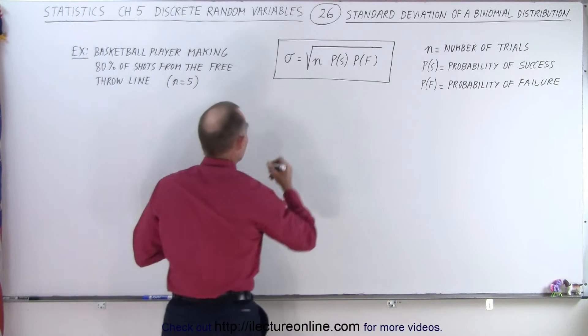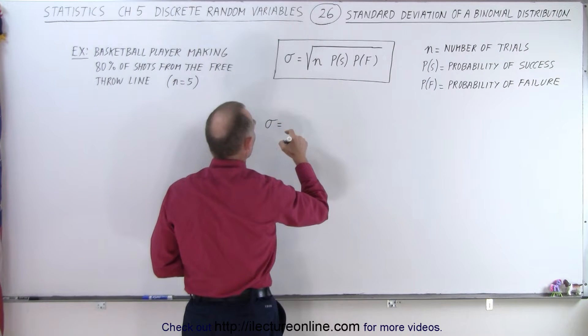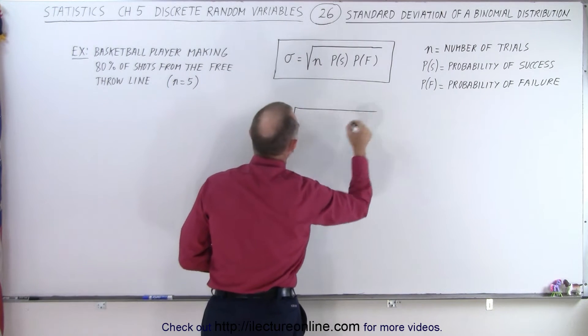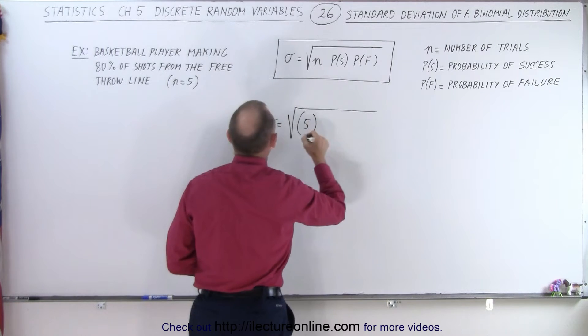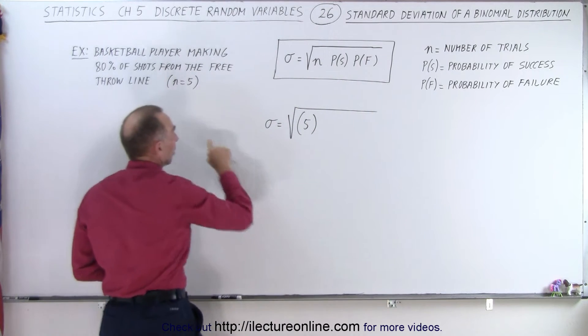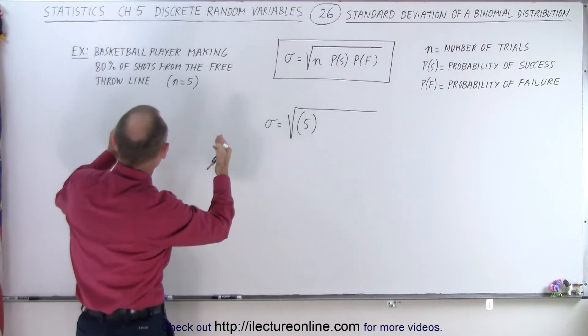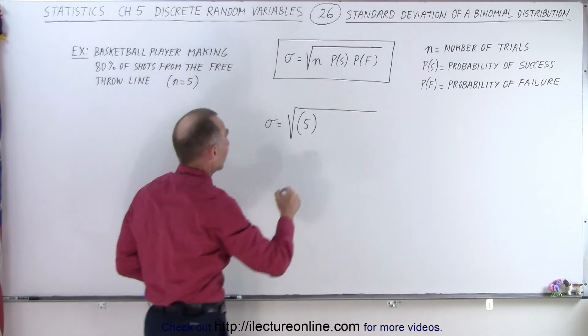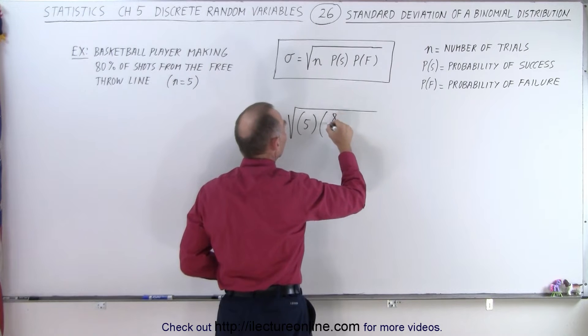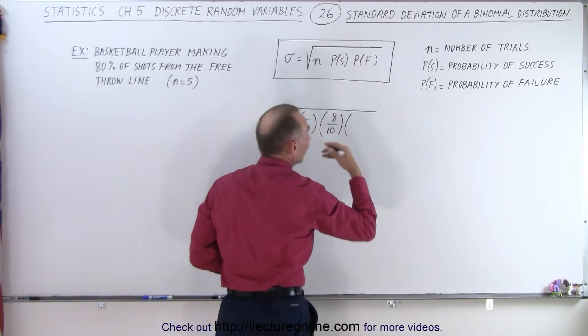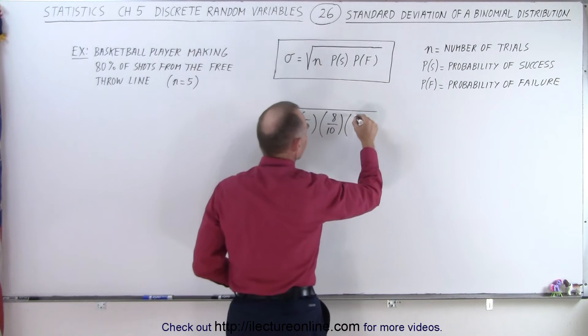So how do we calculate it? Well, sigma, standard deviation, is equal to the square root of n. In this case n is five because he's going to make five attempts. The probability of success is eighty percent because he's making eighty percent of his shots, so it would be eight out of ten. And the probability of failure that he'll miss a shot is two out of ten.